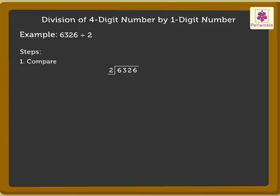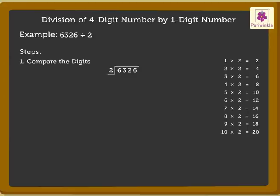We start with comparing the digit in the thousandth place, that is 6 with 2. Yes, 6 is greater than 2 and therefore, we can divide 6 by 2. Here, we use the table of 2 such that the product is equal to or less than and nearest to 6. 3 into 2 is equal to 6. Hence, we write 3 above the 6 and the number 6 in the thousands column under 6.